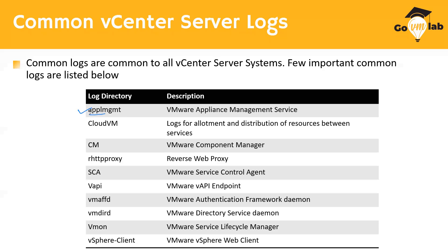The appliance management log directory is more about your appliance management service. You have a vCenter Server appliance (VCSA), and for any appliance management issues — maybe your VAMI UI is not coming up or some services are not coming up — that's where you have to go and look at this particular folder, which holds information very specific to appliance management.